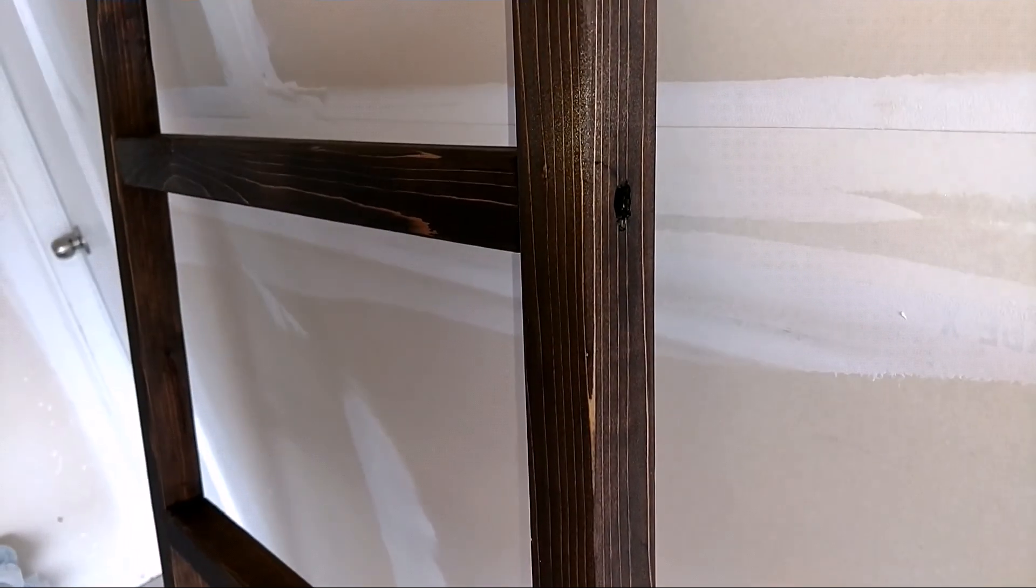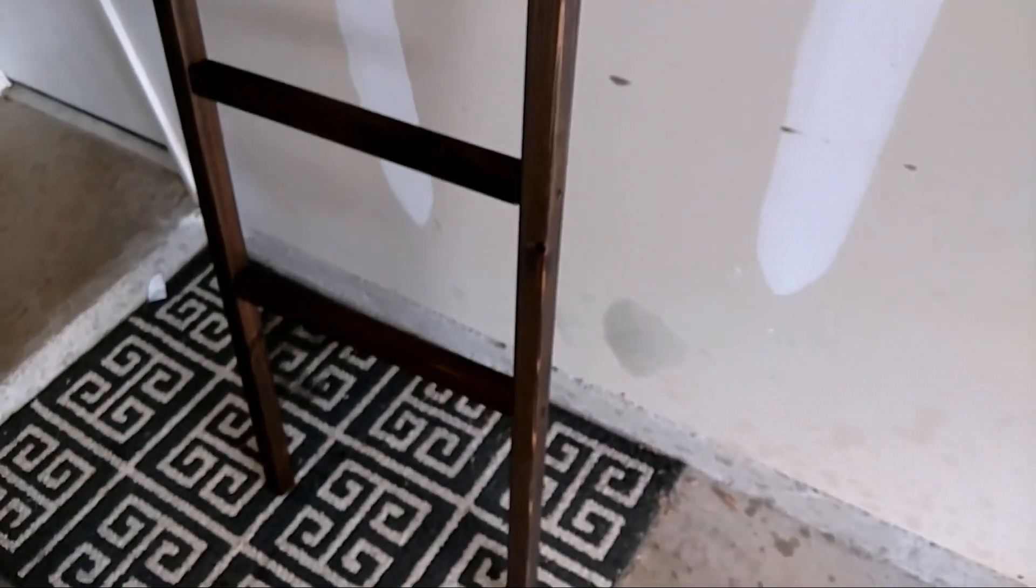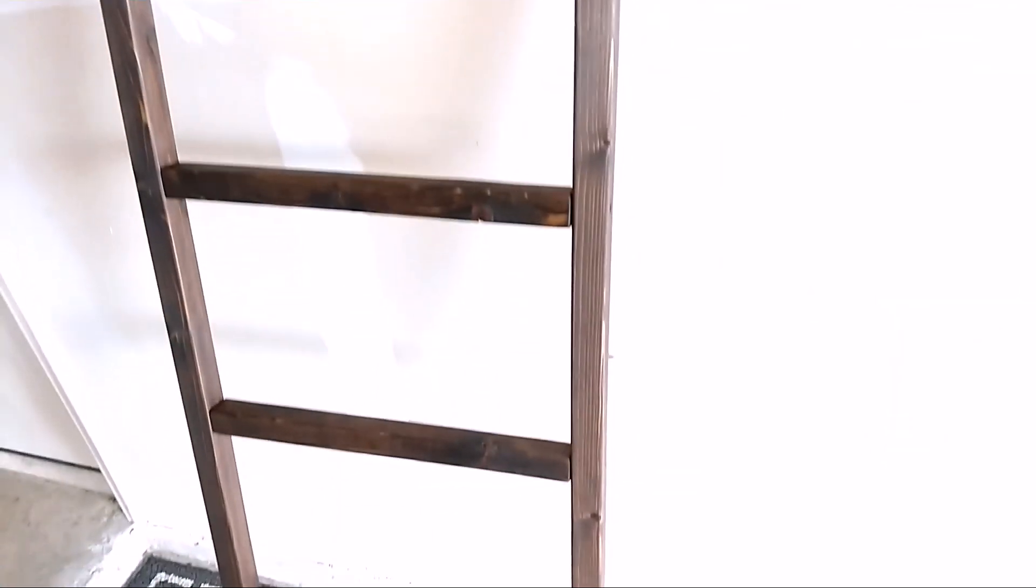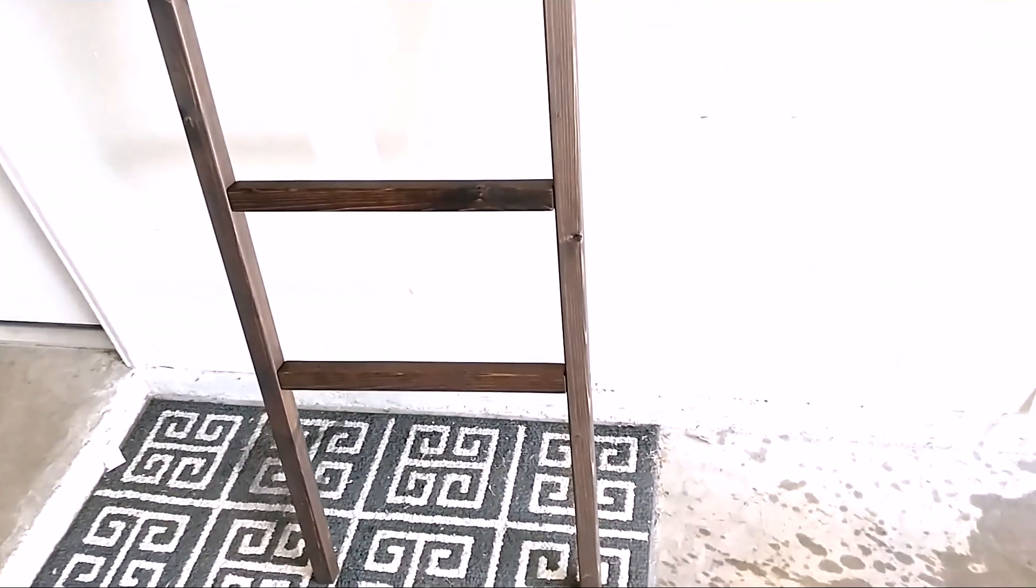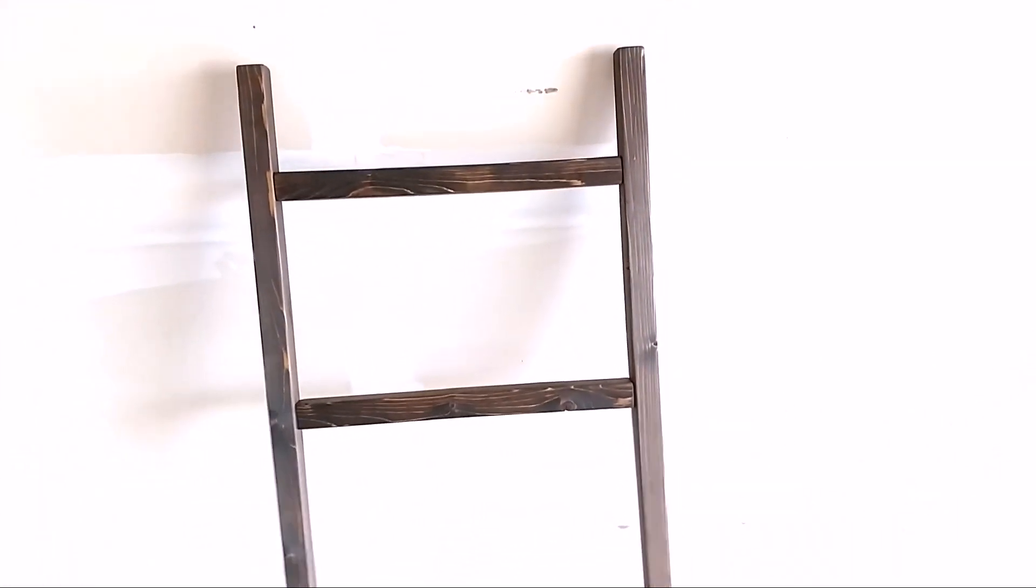Got all the screw holes touched up. Now I'm just going to let it dry. I just used a small paint brush to get inside those holes to touch them up. And then once it's dried, I'll go ahead and polyurethane it with it all together here. Yay, we're almost done.